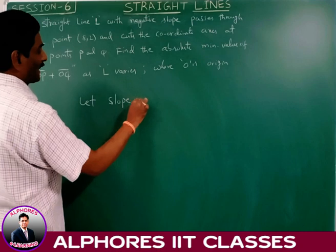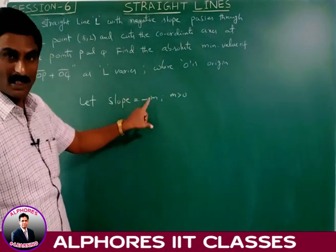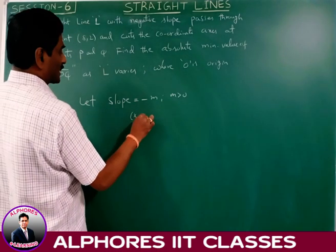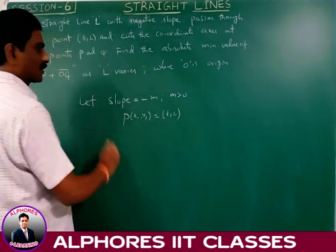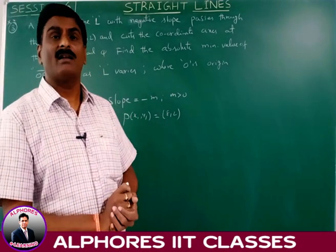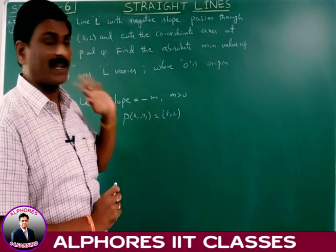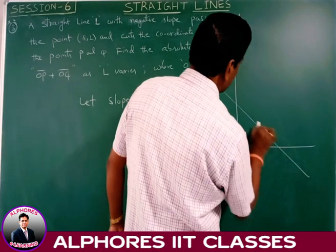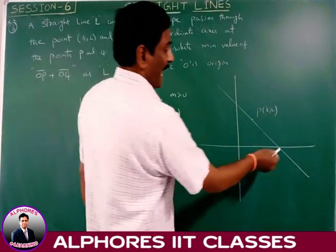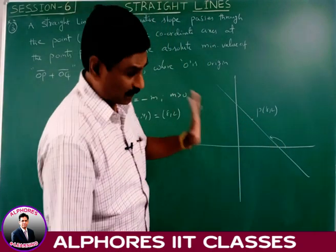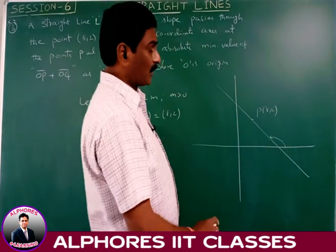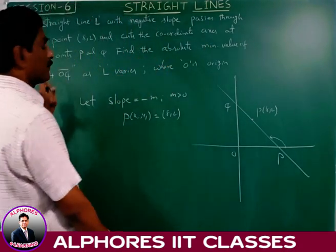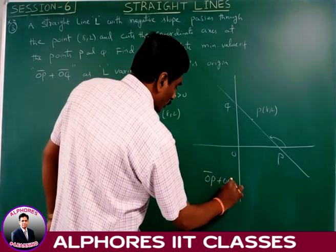Let slope equal minus M, where M > 0. The line passes through (8, 2). Using the direct formula with slope minus M/1 and point (8, 2), the equation is Mx plus y equals 8M plus 2. To find OP and OQ, we reduce this to intercept form by dividing both sides by 8M plus 2, giving x/((8M+2)/M) plus y/(8M+2) equals 1. So OP equals 8 plus 2/M and OQ equals 8M plus 2.